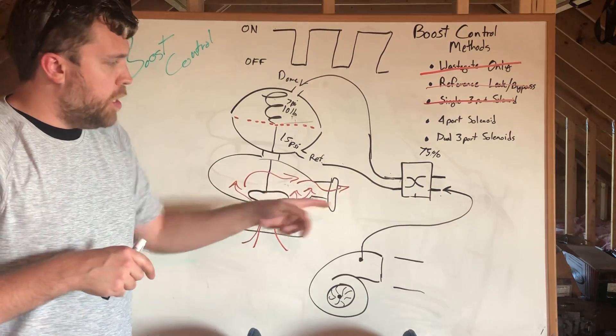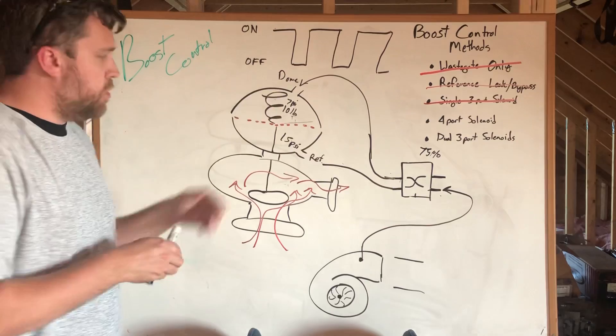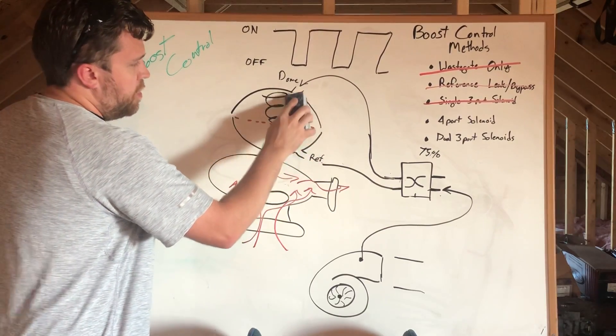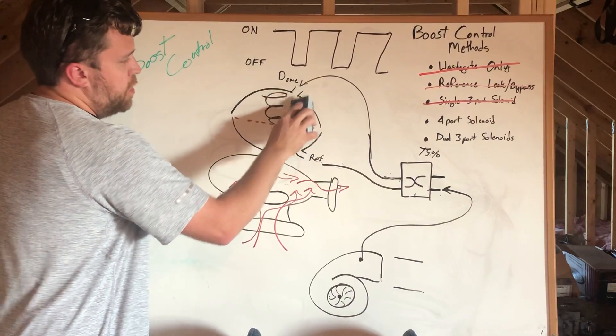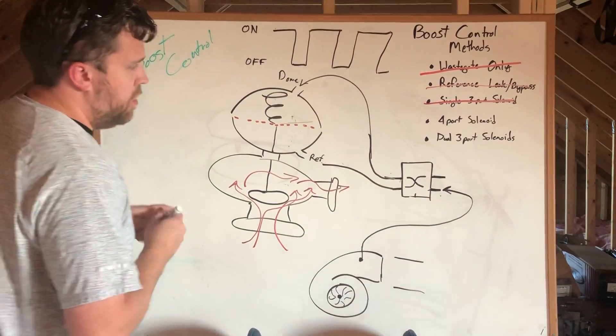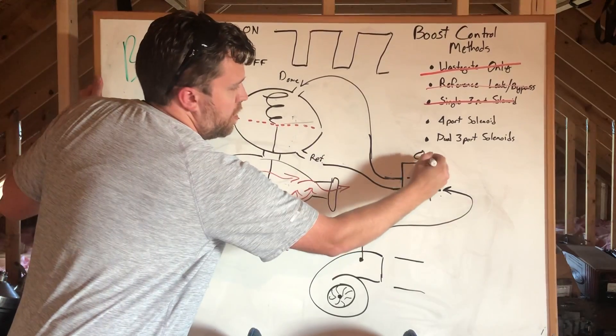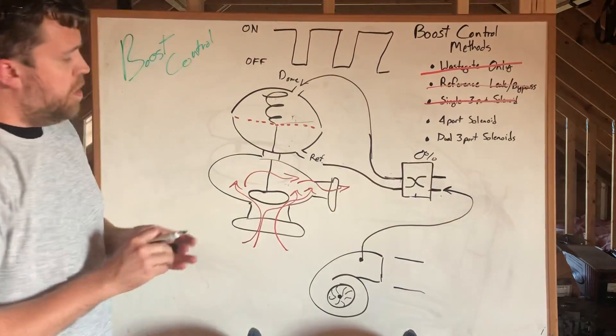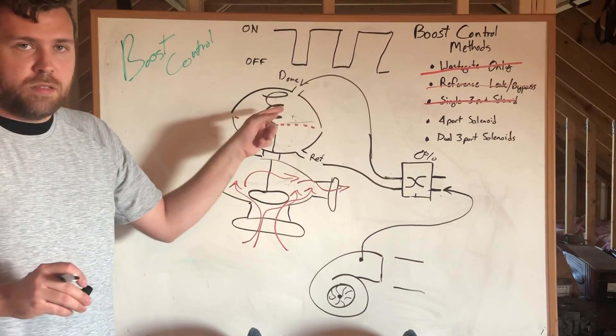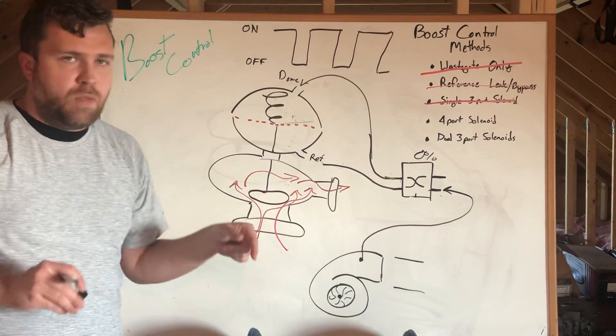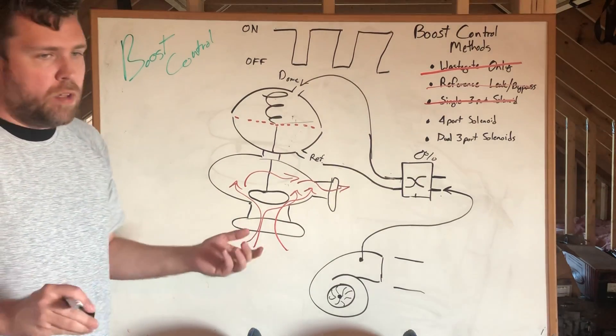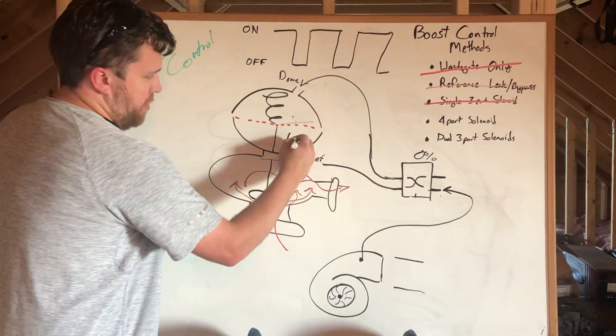I said that wrong. At zero percent, you're going to get full reference and zero dome pressure. That's going to be effectively wastegate pressure. You're going to run whatever it runs on the gate. Let's say it's 10 pounds—I love 10 pounds, it makes the math easy.